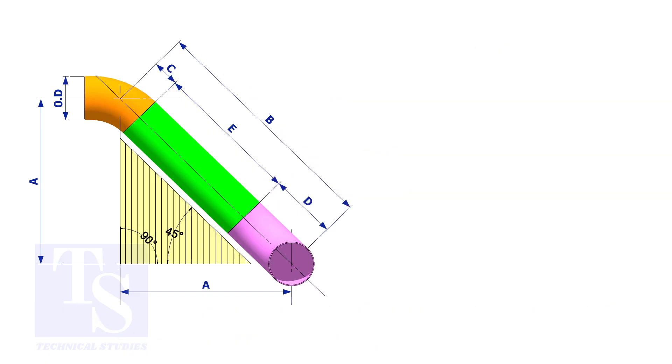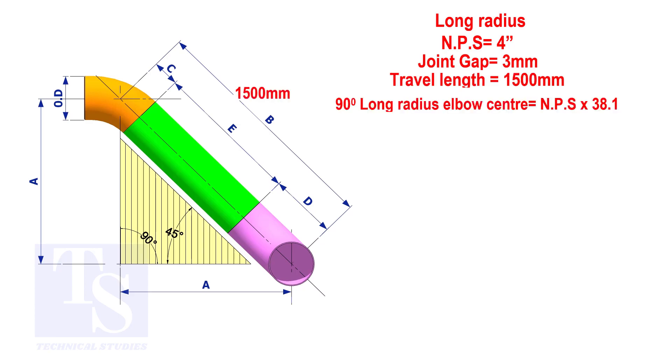Assume that the elbows are long radius. Calculate the true length of the pipe. The elbow center is the nominal pipe size multiplied by 38.1. So, the elbow center of the 90 degree elbow is 152.4 millimeters.